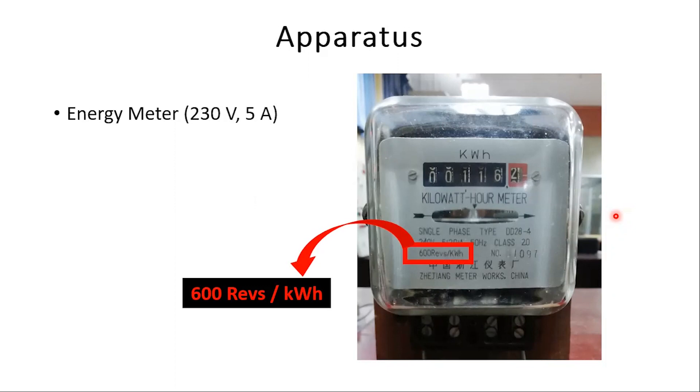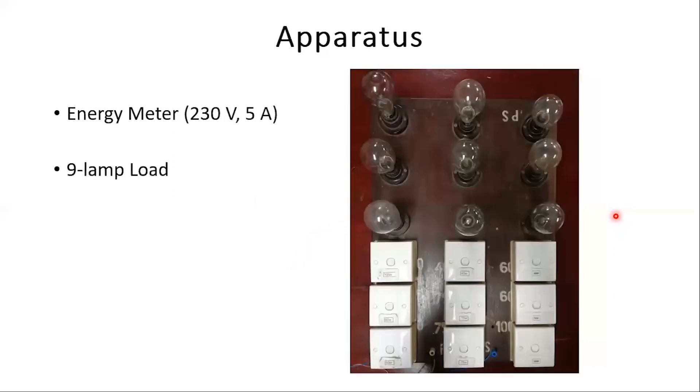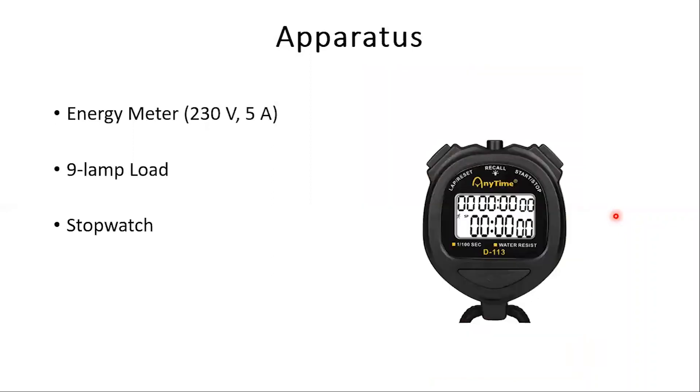This simply means that 600 revolutions of the meter represents one kilowatt hour of energy transmitted. The next component in our apparatus is a nine clamp load which consists of incandescent lamps of different voltages having separate switches, and finally a stopwatch.